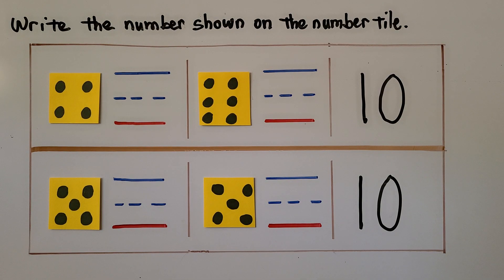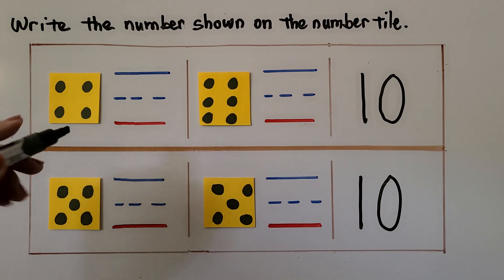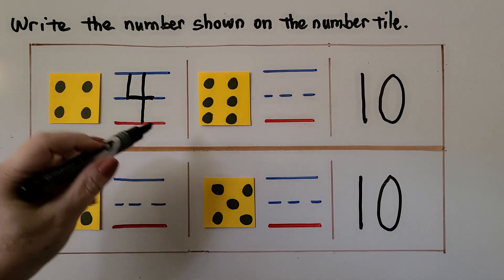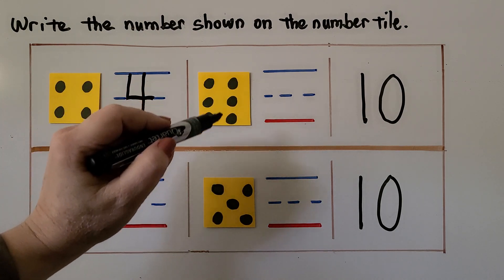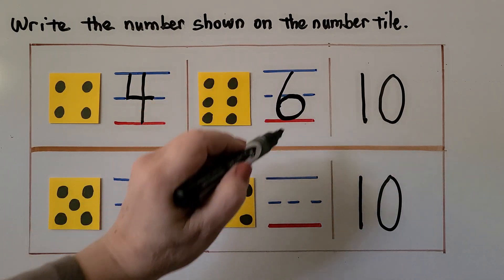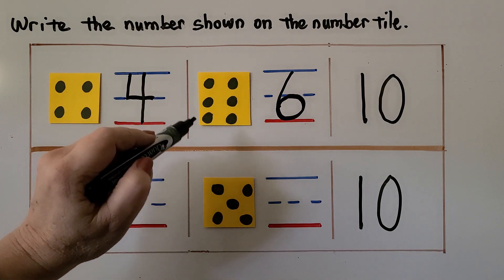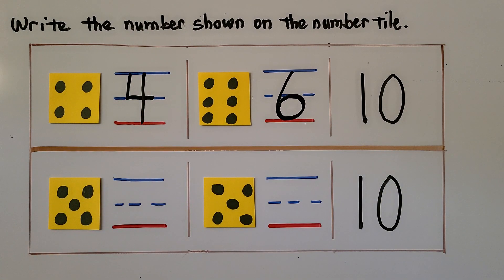Here we have some number tiles. We need to write the number shown on the number tile. This number tile shows one, two, three, four — we can write the number four. This number tile shows one, two, three, four, five, six — we write the number six. Four and six make 10.